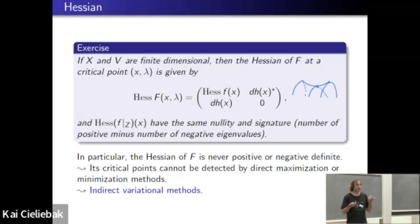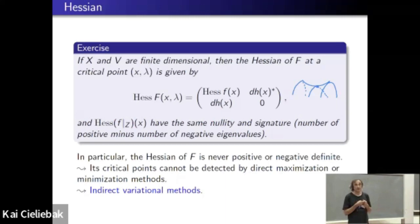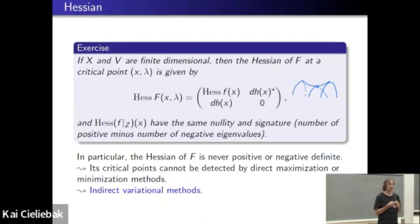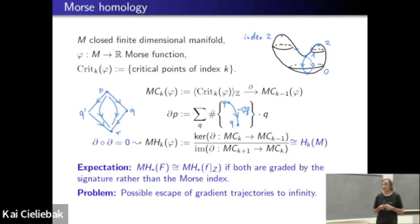Now we want to use this Lagrange multiplier functional capital F to find critical points of f subject to the constraint. Because the Hessian is never definite, the direct methods in calculus of variations will not work — those are designed to find maxima or minima under some convexity assumption. So we need to resort to some indirect methods. Our favorite indirect method to find critical points of a function is Morse theory, which goes back to the 1930s.